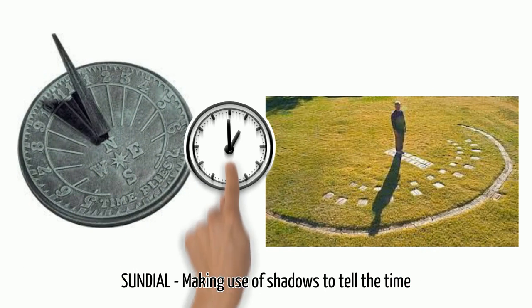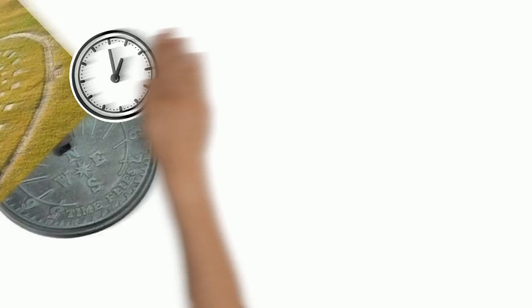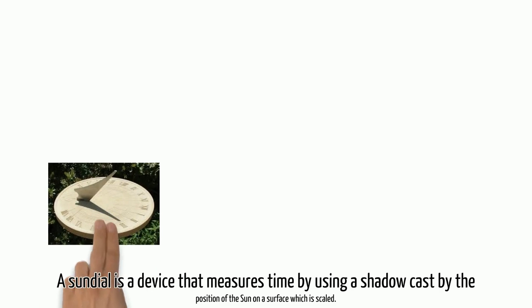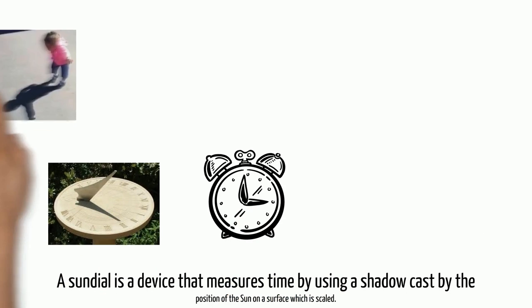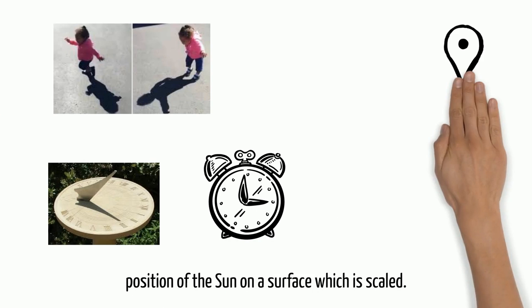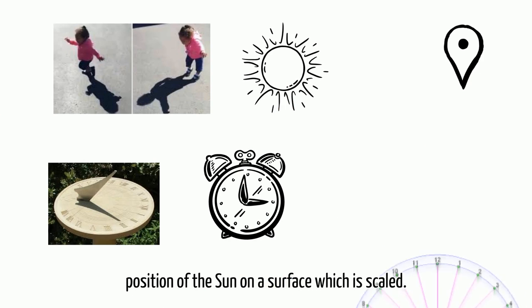Making use of shadows to tell the time. A sundial is a device that measures time by using a shadow cast by the position of the sun on a surface which is scaled.